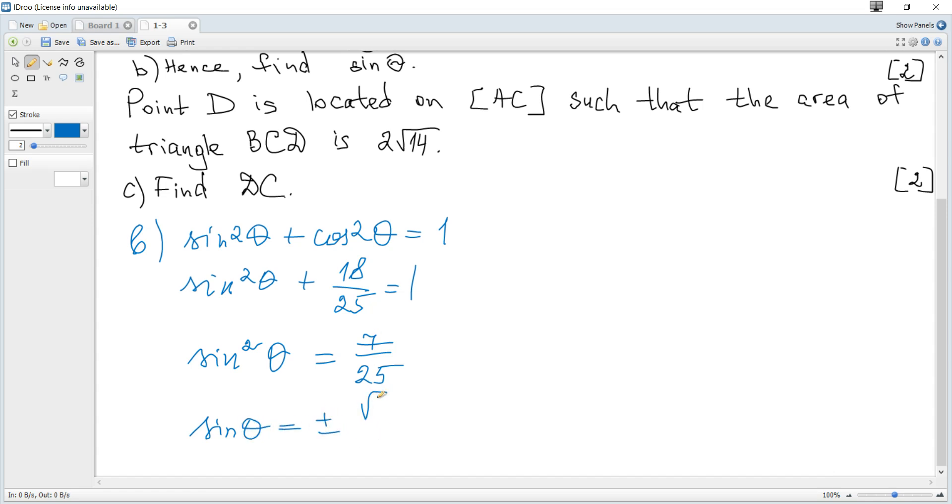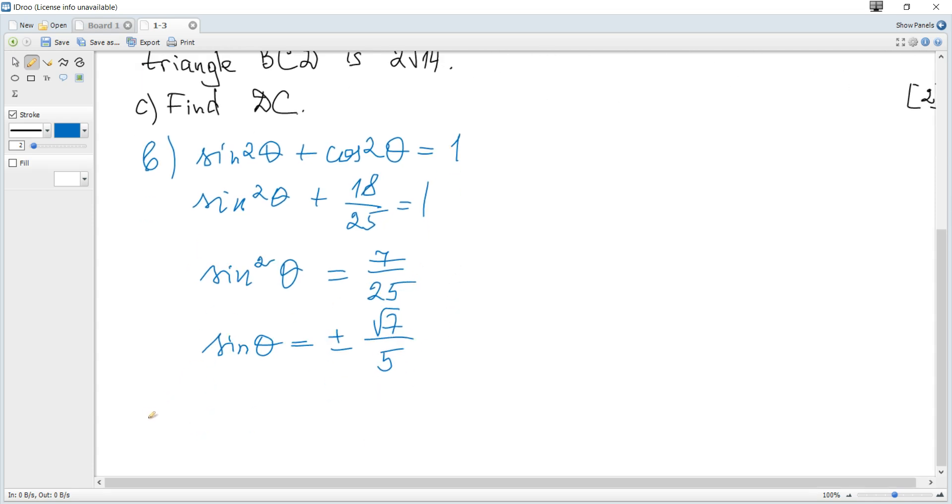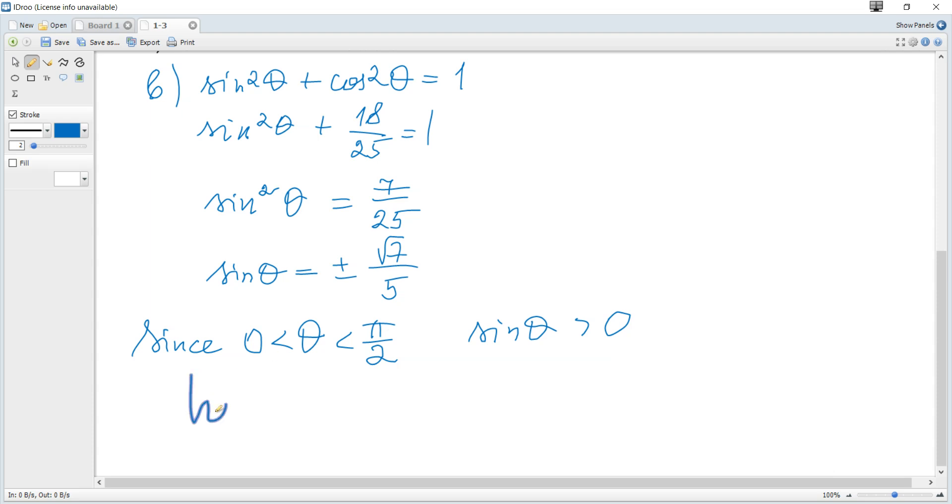Square root of 7 over square root of 25 is 5, but since theta is between zero and pi over 2, it's an acute angle and hence sine of theta is positive. Therefore, sine of theta is plus root 7 over 5.